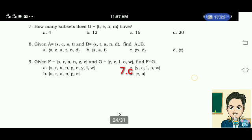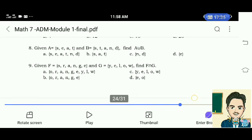Number 8. Given A having elements S, E, A, T, and D. And B elements S, T, A, and D. Find A union B. The correct answer is letter A. Elements S, E, A, T, and D.